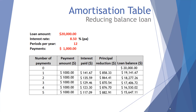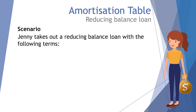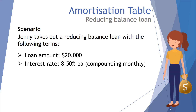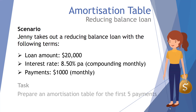Welcome mathematicians. Today's video we're looking at the amortization table in the context of reducing balance loans. Our scenario is: Jenny takes out a reducing balance loan with a loan of twenty thousand dollars, charged an interest rate of eight point five percent per annum compounding monthly. She makes monthly payments of one thousand dollars, and the task is to prepare an amortization table for the first five payments.